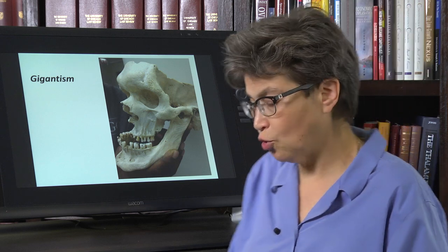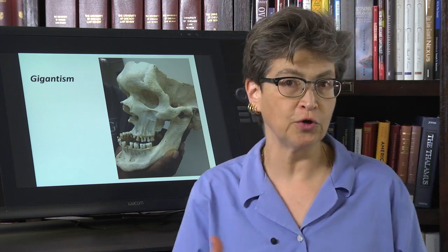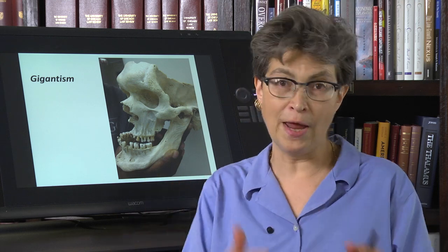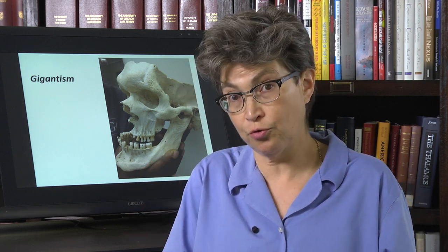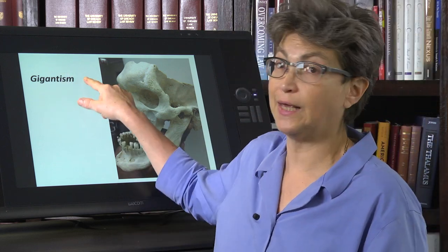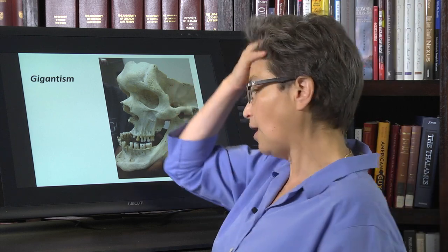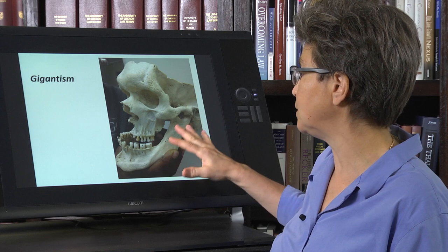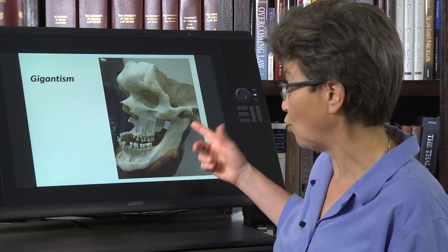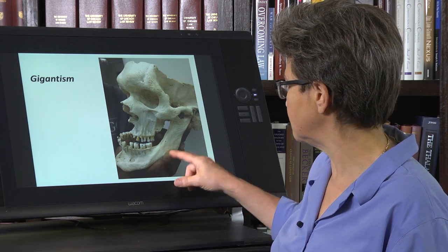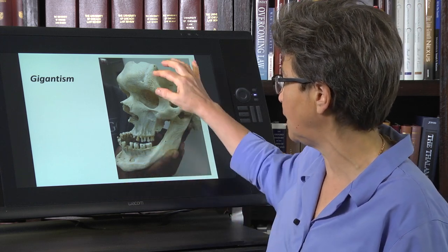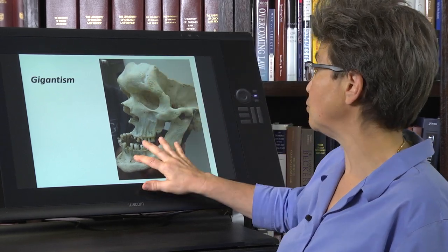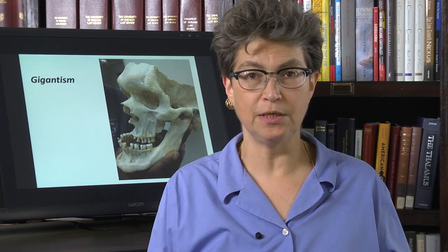The second hormone is growth hormone, which has two different effects depending on when excess growth hormone is secreted. If too much growth hormone is secreted during development, you get something called gigantism. Here is a skull from the University of Chicago collection of an individual who had gigantism — you can see the jutting chin, the very pronounced brow, the very large size. These people can grow to be easily seven feet and taller, and it is a very devastating disease.